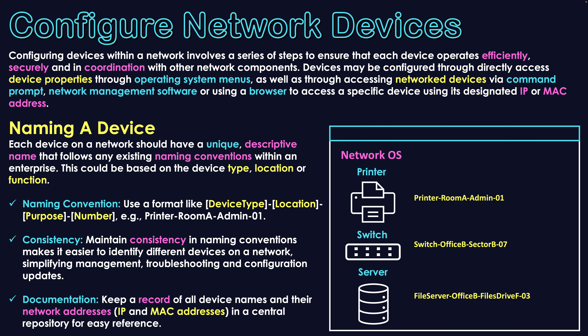Along with the names, it's also important to document them — keeping a record of all device names and their network addresses, IP and MAC addresses, in a centralized location for easy reference. This might be a written record or a file that lists all the technology on your network with their names, so you can reference, refer to, and update them when needed.